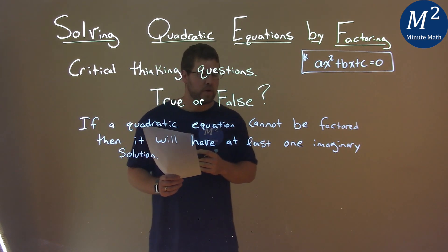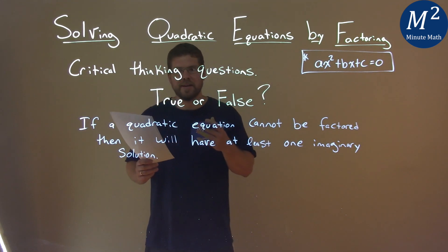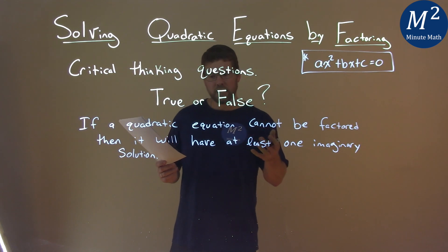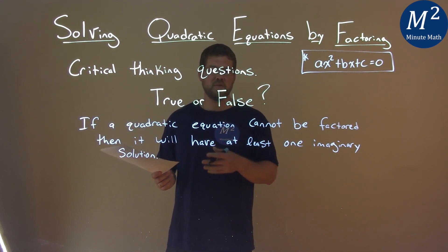All right, let's go through our answer here. So let's see if we can find this to be false. We have to find an example of a quadratic equation that cannot be factored, but if it doesn't have an imaginary solution, only real solutions, then we're good.